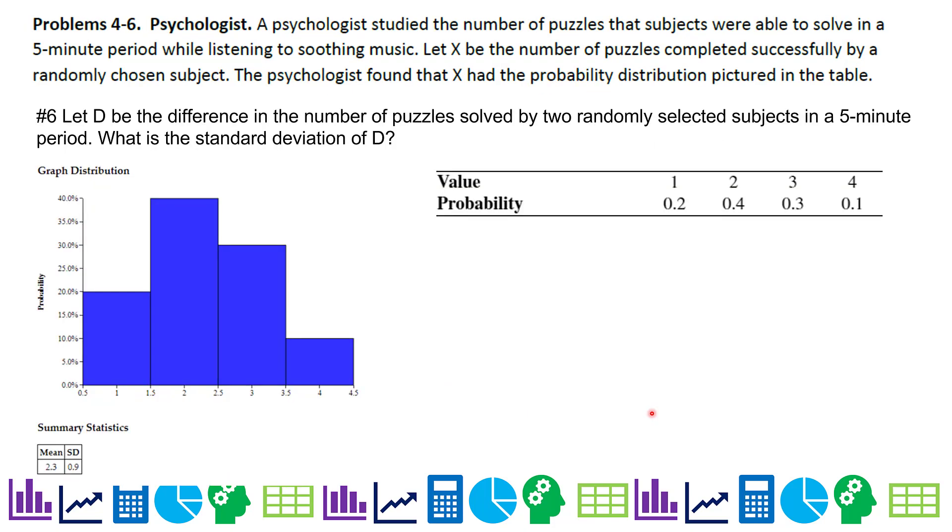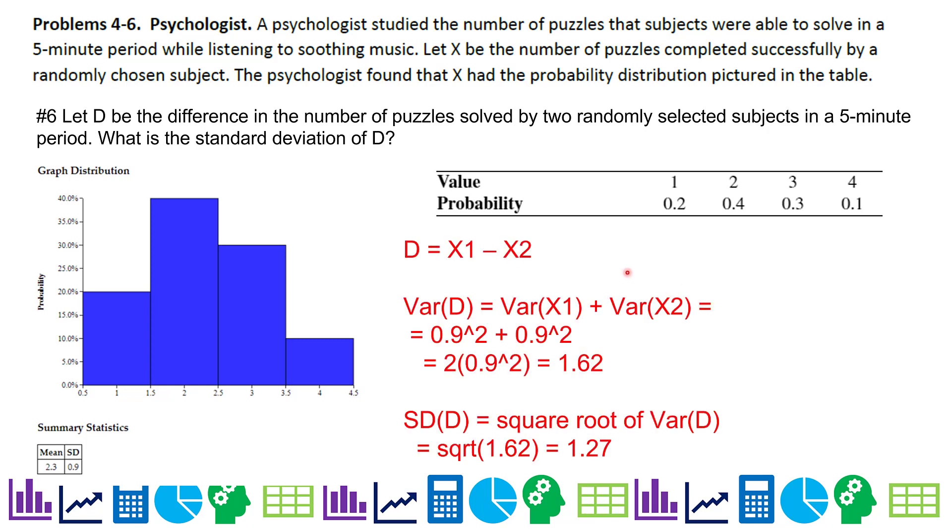Let D be the difference in the number of puzzles solved by two randomly selected subjects in a five-minute period. What is the standard deviation of D? This is actually a combination of variables because we're saying subject one minus subject two. I do know I'm taking the two measurements and I'm subtracting them. Since we are combining variables, I must, must, must work in variance. The variance of D is going to be the variance of X1 plus the variance of X2. We never subtract variances when combining variables. We always add them.